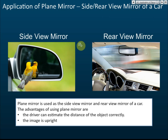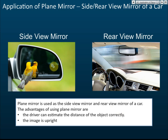Side mirrors and rear-view mirrors of a car also use plain mirrors. In exams, you may be asked about the advantages. First, because in a plain mirror the distance of the object equals the distance of the image, the driver can accurately estimate how far away another vehicle is. With a convex or concave mirror, the distances differ, making it hard to estimate correctly.